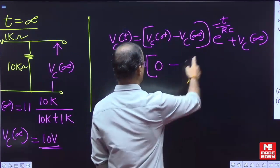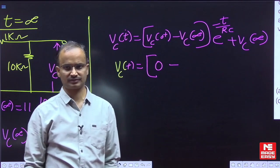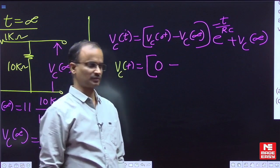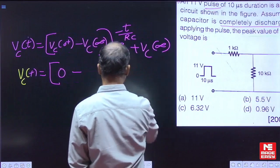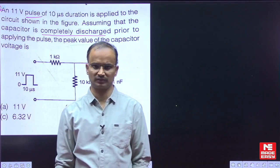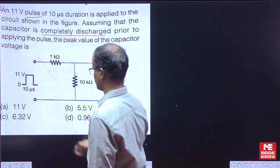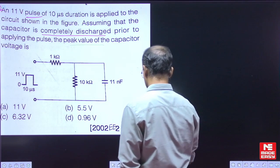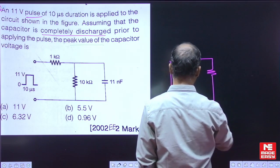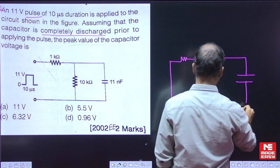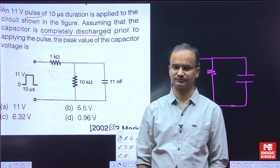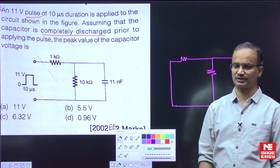Now to obtain the general equation, we need the equivalent resistance and equivalent capacitance — that means we need the time constant. To find the time constant, we deactivate all the given independent sources. The given voltage source is deactivated by making voltage equal to 0, which we indicate as a short circuit.